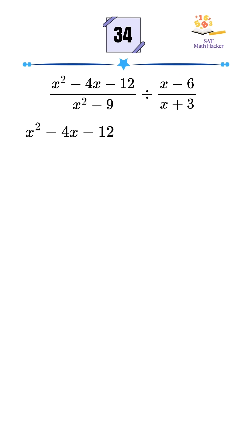The numerator x squared minus 4x minus 12 factors into x minus 6 times x plus 2, and the denominator x squared minus 9 is a difference of squares, which becomes x minus 3 times x plus 3.